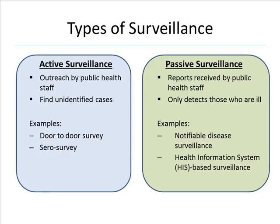Slide 19: These are the types of surveillance by collection strategy. Active surveillance is carried out by public health staff — they find unidentified cases. Examples include door-to-door surveys or SARO surveys. In passive surveillance, reports are received by public health staff; it only detects those who are ill. Examples include notifiable disease surveillance and health information system (HIS)-based surveillance.